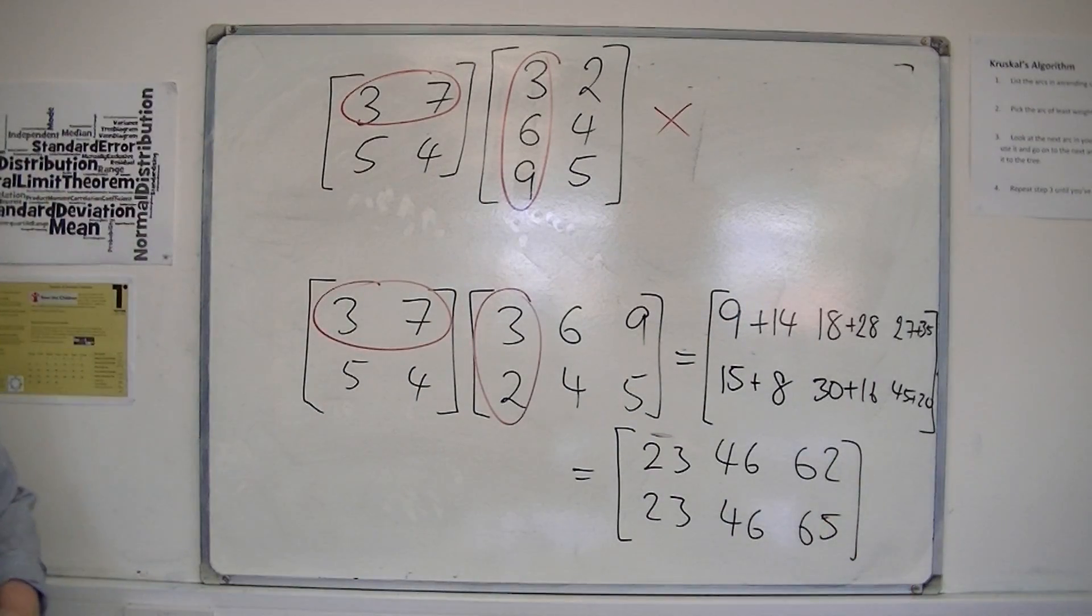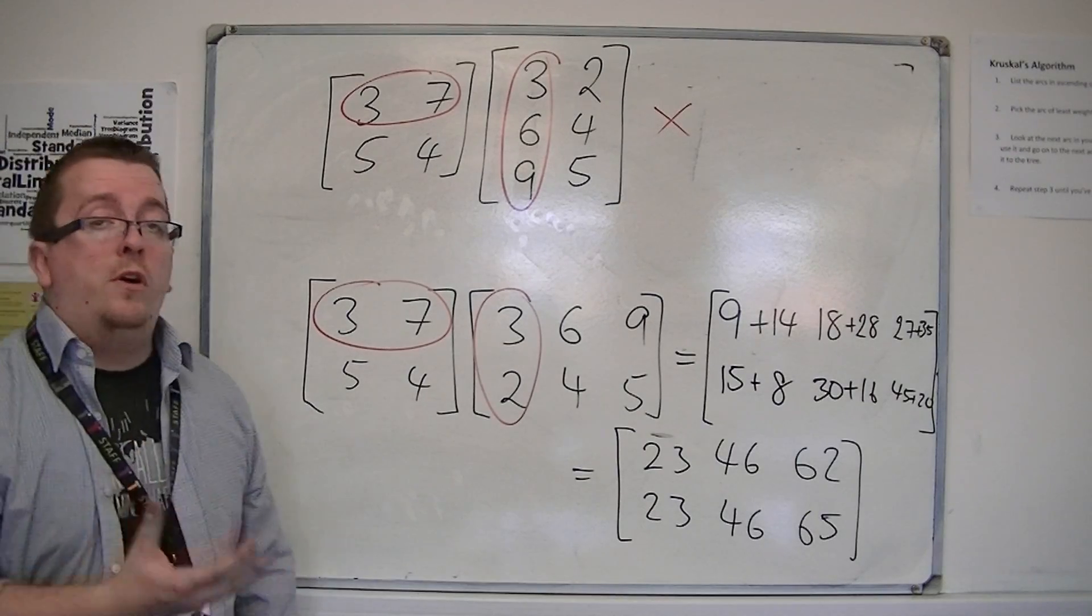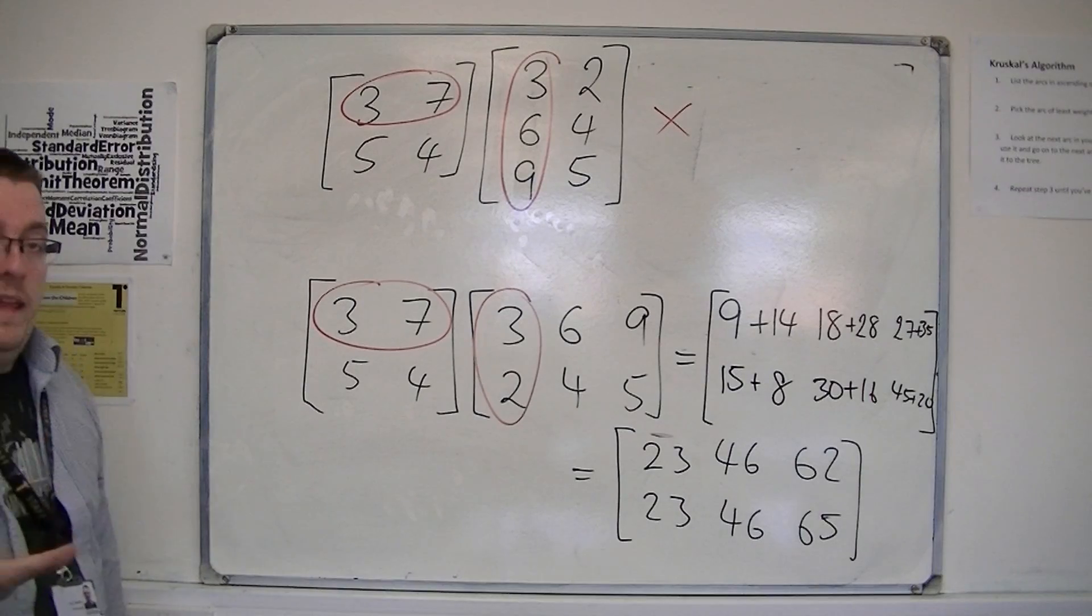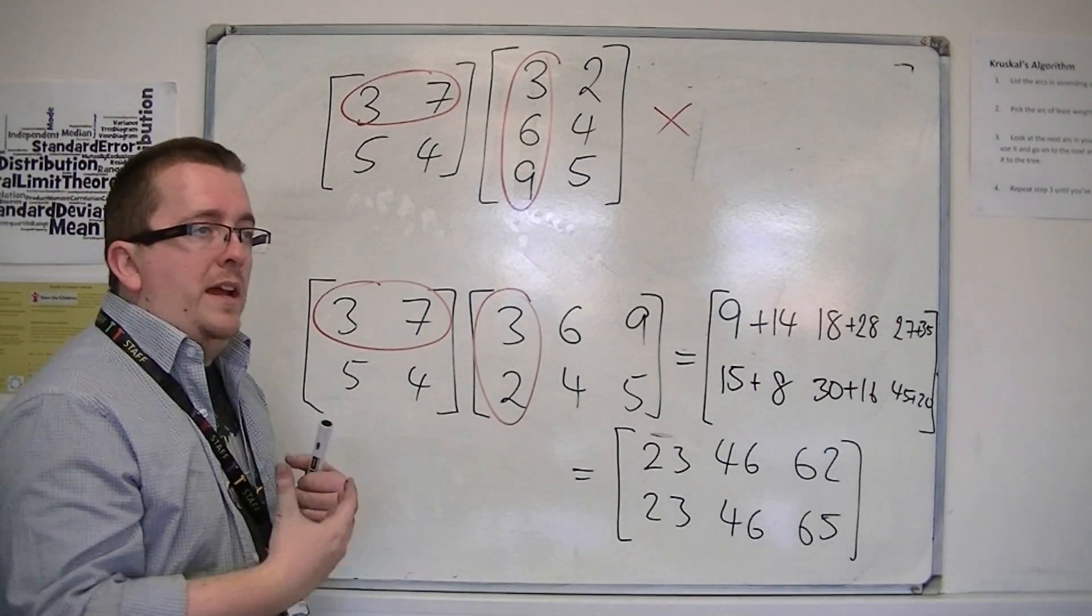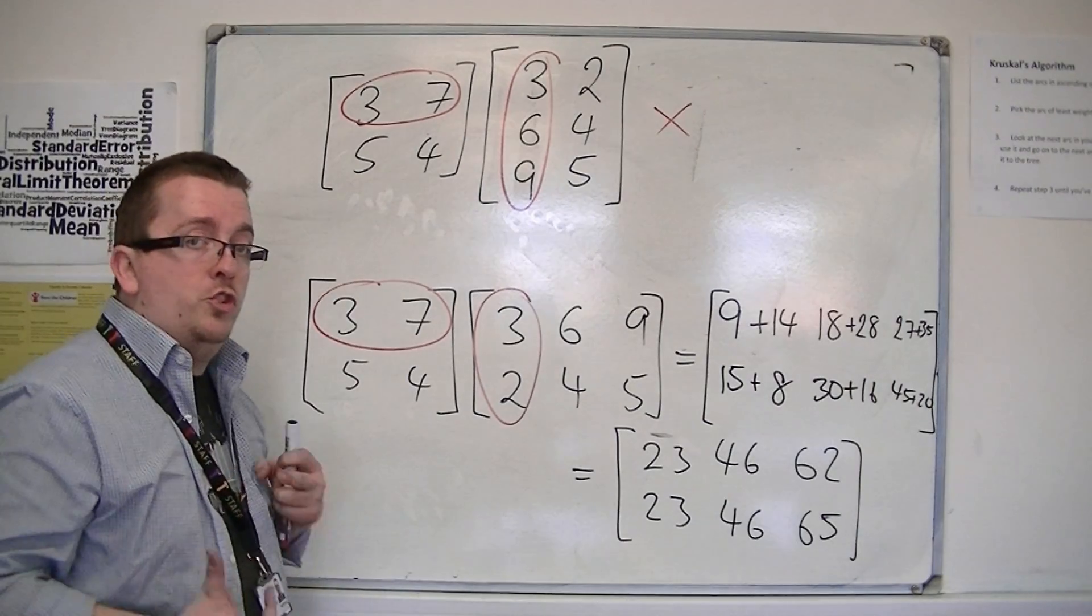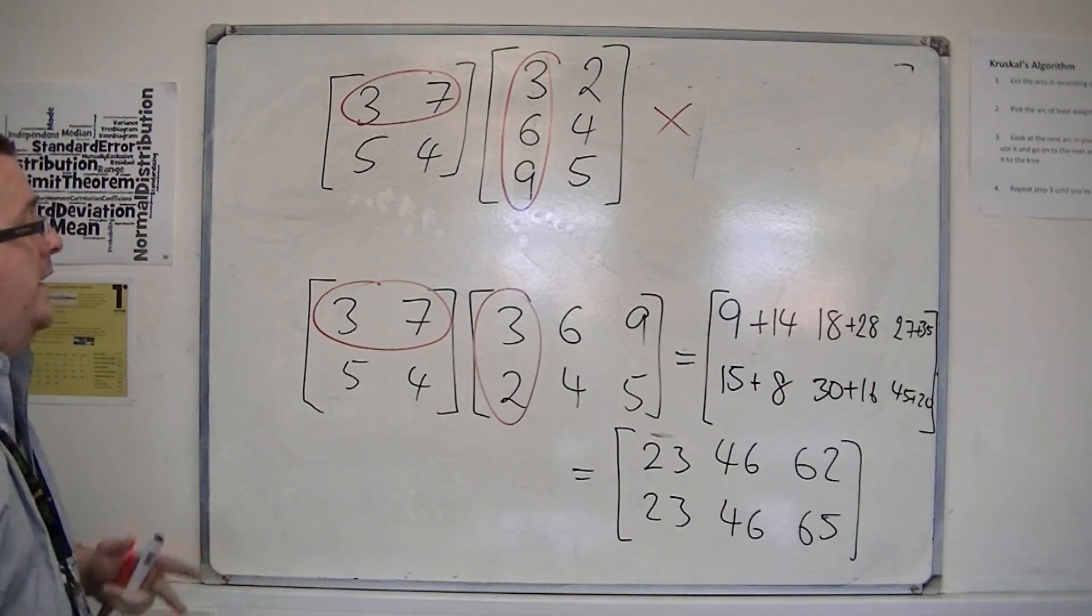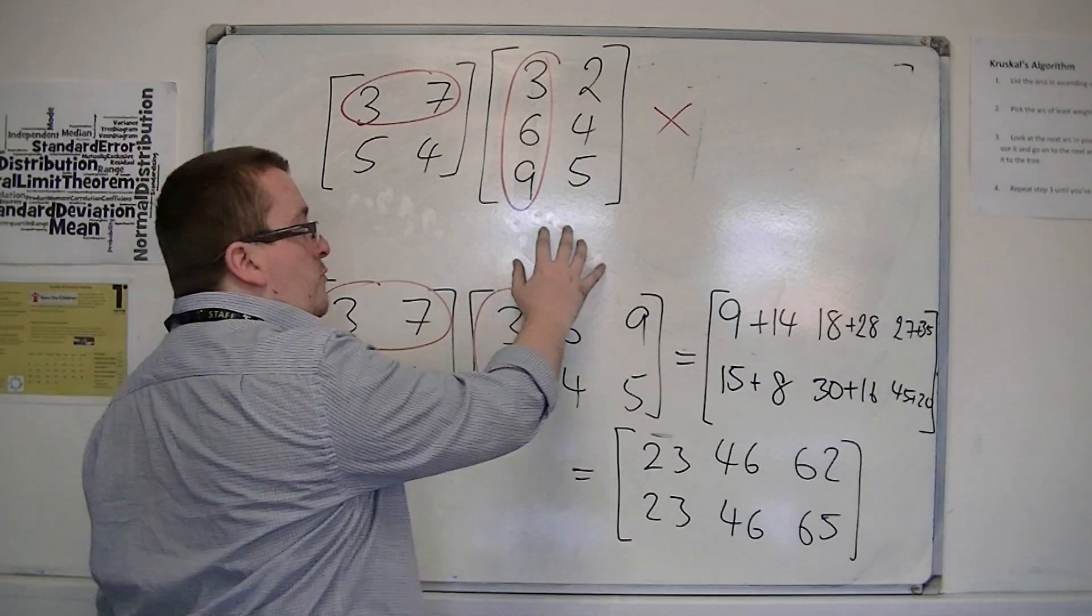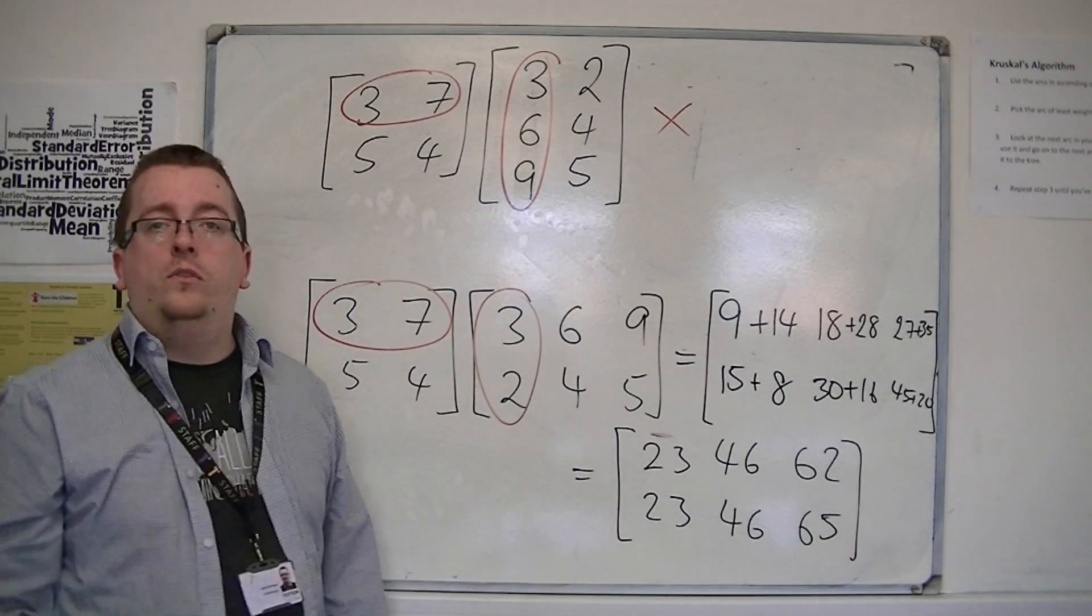So, what you can see here is that the number of rows and columns makes a difference when you're multiplying. It's not just a clear-cut case that if you don't have two matrices in the same order, you can't multiply them together. That's not true. It just depends that if the number of columns in the first matrix is the same as the number of rows in the second, then it works.